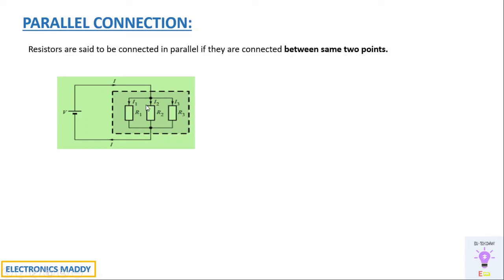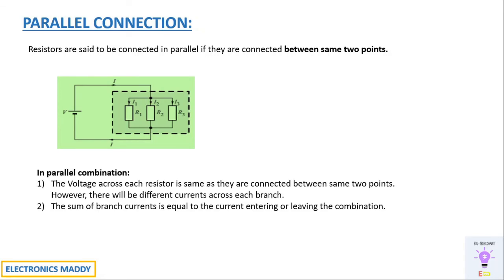There are two important points for parallel connection. First, the voltage across each resistor is the same, as they are connected between the same two points. If V is the supplied voltage, measuring the voltage at these two points will give the same value as whatever is supplied. However, the current flowing through each branch will be different according to the resistances — higher the resistance, lesser will be the current; lesser the resistance, higher will be the current.